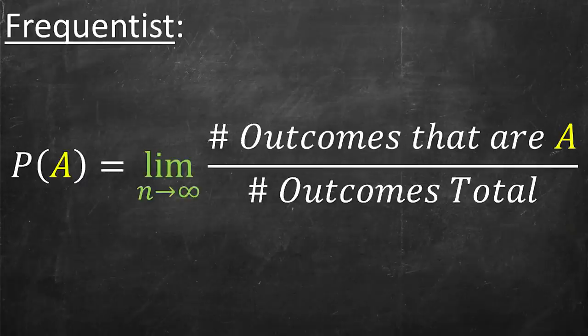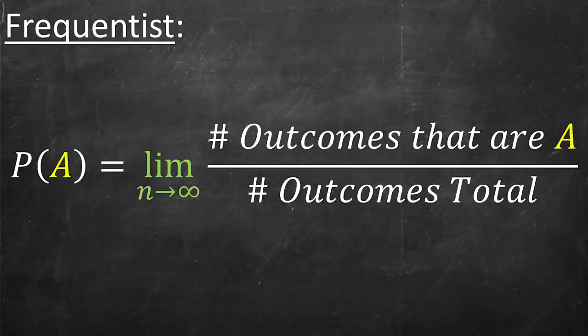The frequentist approach basically defines probability as a limit. It's imagining you were taking these experiments over and over and over again, and in the limit as n gets large, the ratio of the number of events you're trying to measure divided by the total number of trials — the total number of experiments — is going to become the frequentist probability. In classical probability, you sort of know everything about your scenario. But in the frequentist approach, great for when you have an imperfect scenario, you collect a whole bunch of data and figure out what the probability is going to be based on your trials.